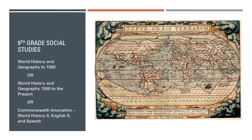Ninth grade social studies students have three options. They can take World History and Geography to 1500, where they explore the dawn of civilization, examine river valley civilizations, classical Greece and Rome, the Middle Ages, and end with the Renaissance. Or they can take World History and Geography 1500 to the Present, picking up at the Renaissance and following through the Reformation, the expansion of empires around the world, all the way to the modern era.